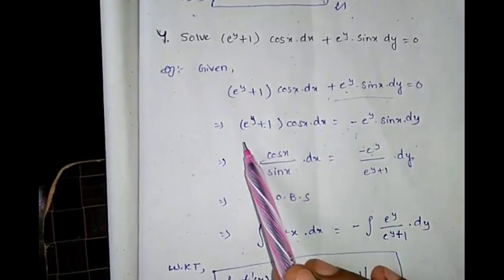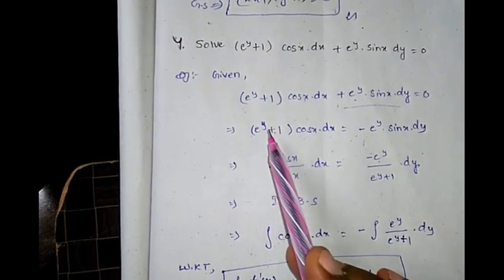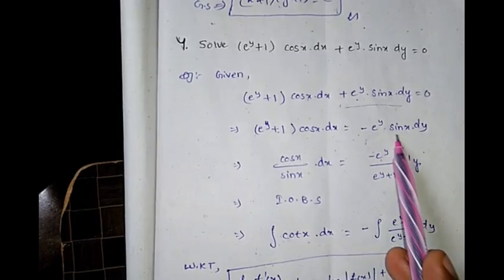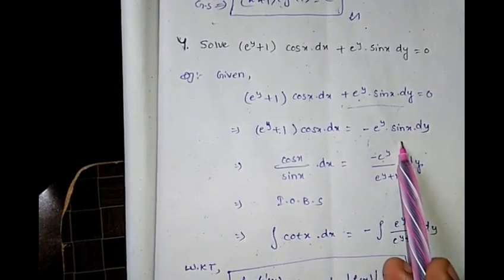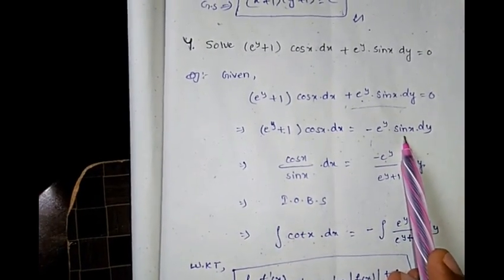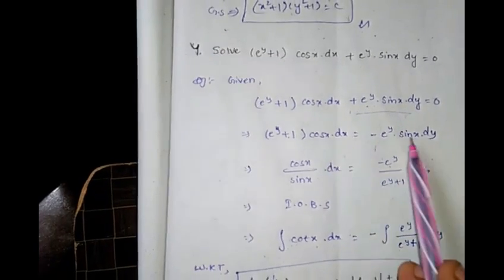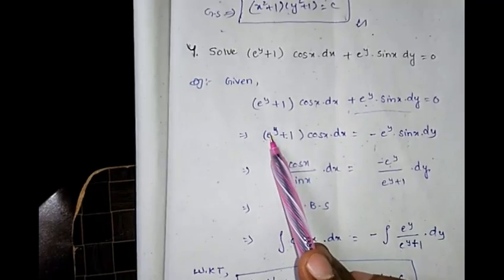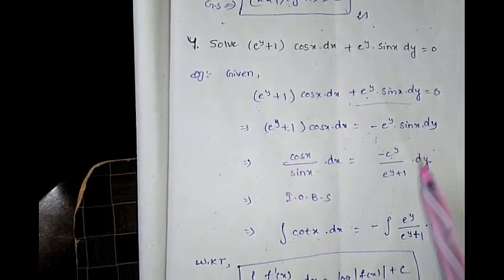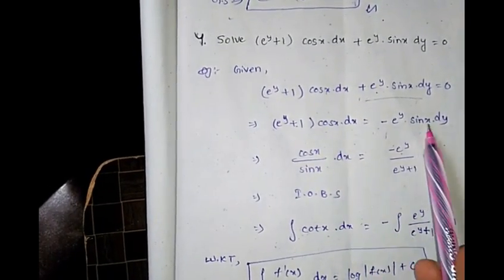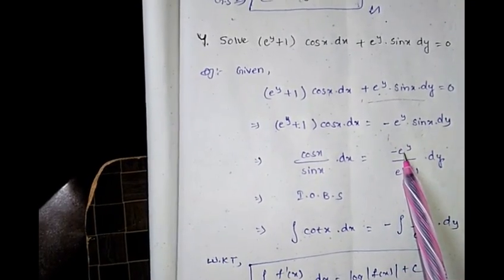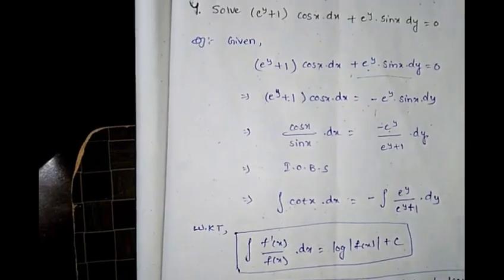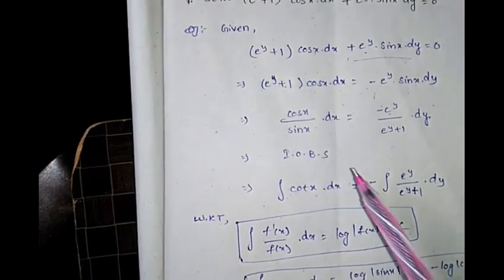We put x terms on one side and y terms on the other side. We get cosx/sinx dx = −eʸ/(eʸ+1) dy. Integrating on both sides.